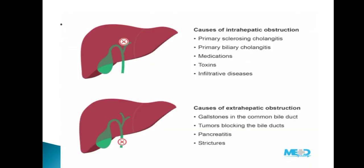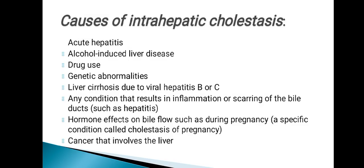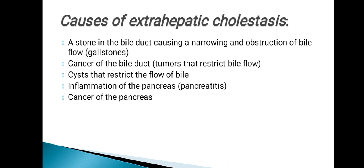The causes of intrahepatic cholestasis include: acute hepatitis, alcohol-induced liver disease, drug use, genetic abnormalities or gene mutation, and liver cirrhosis due to viral hepatitis B or C. Any condition that results in inflammation or scarring of the bile duct, such as hepatitis, can cause it. Hormonal effects on bile flow during pregnancy — a specific condition called cholestasis of pregnancy — and cancer involving the liver are also causes.